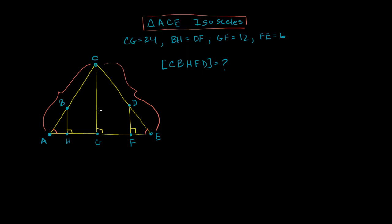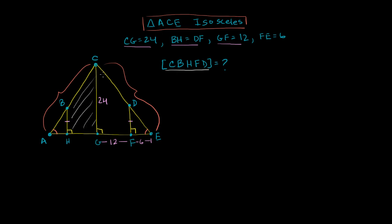They give us more information: CG is equal to 24, so that length is 24. BH is equal to DF — those two are congruent, the same length. GF is equal to 12, so that distance is 12. And finally FE is equal to 6. Then they ask us: what is the area of CBHFD? That's this shaded region here — that part and that part right over there.